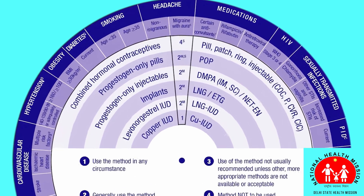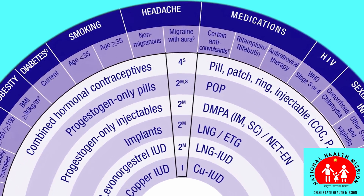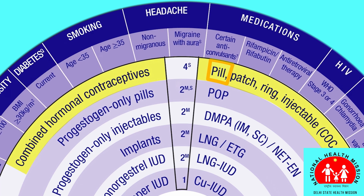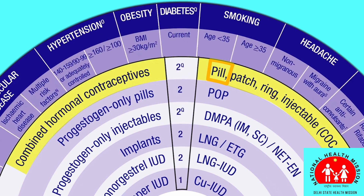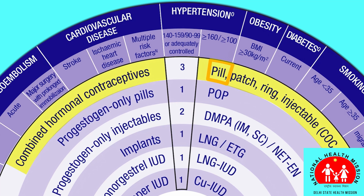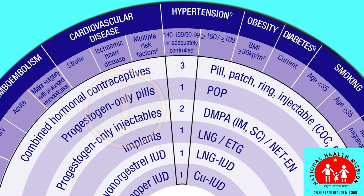Find the contraceptive method on the inner wheel — for example, the pill in the family of combined hormonal contraceptives — then rotate the wheel to the woman's condition on the outer wheel. If it is given a 3 or 4, she should not use the pill. A 1 or 2 indicates the method is safe to use.